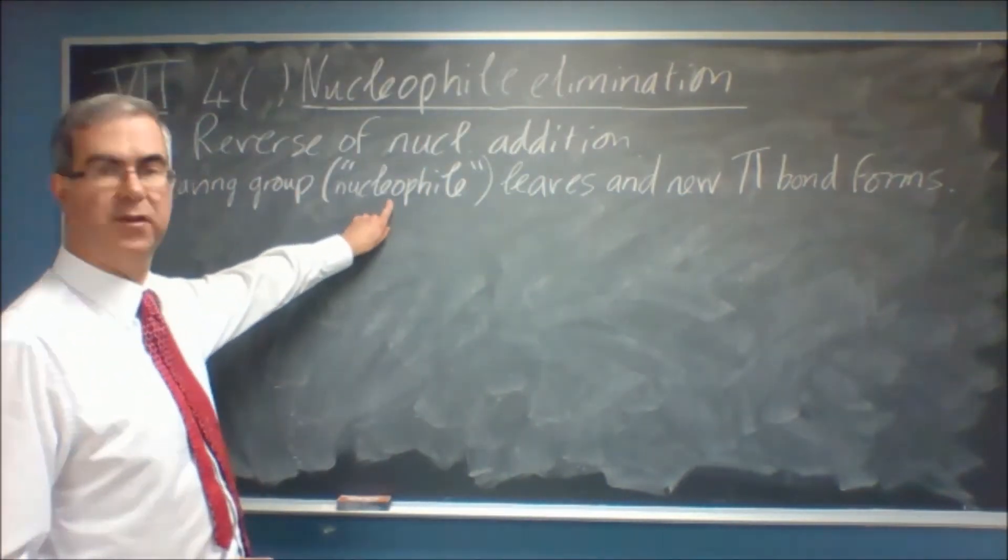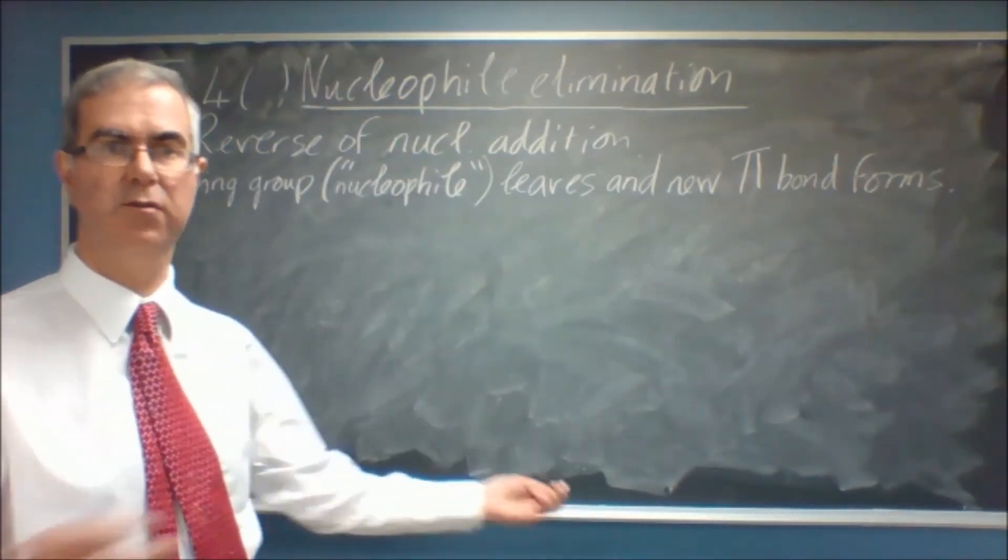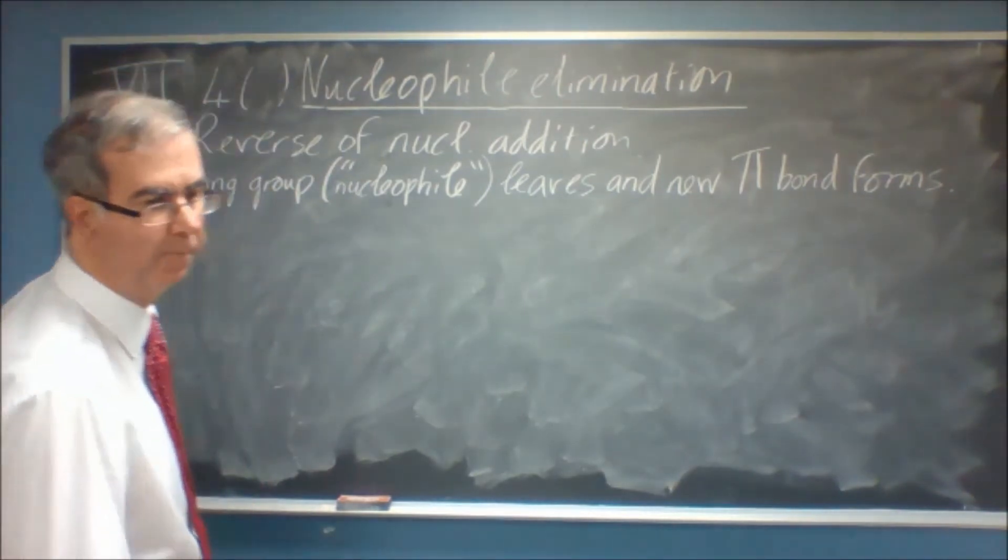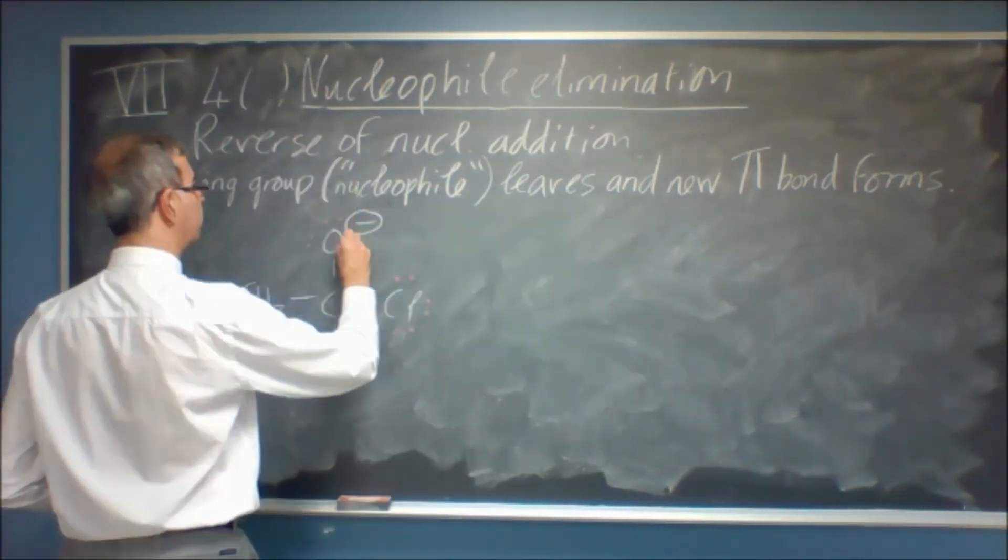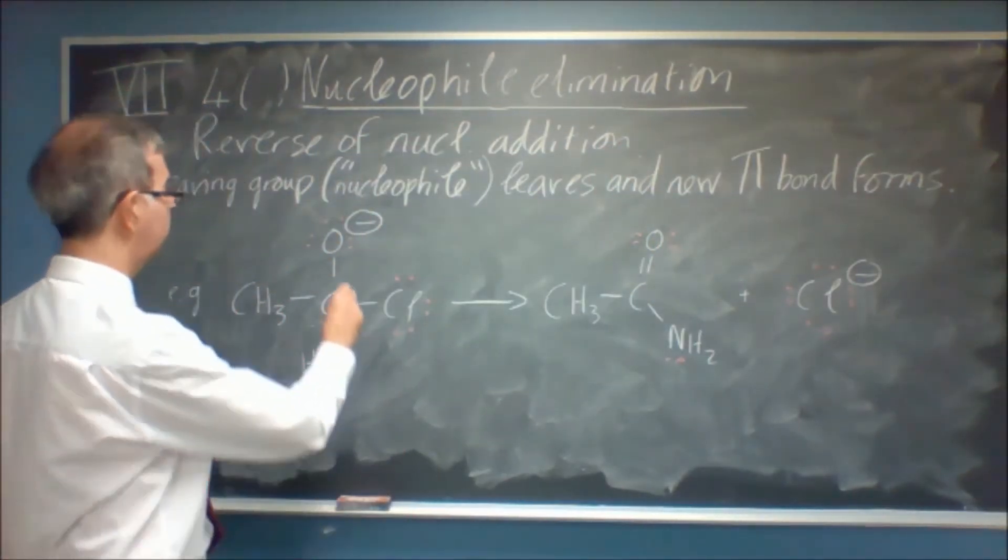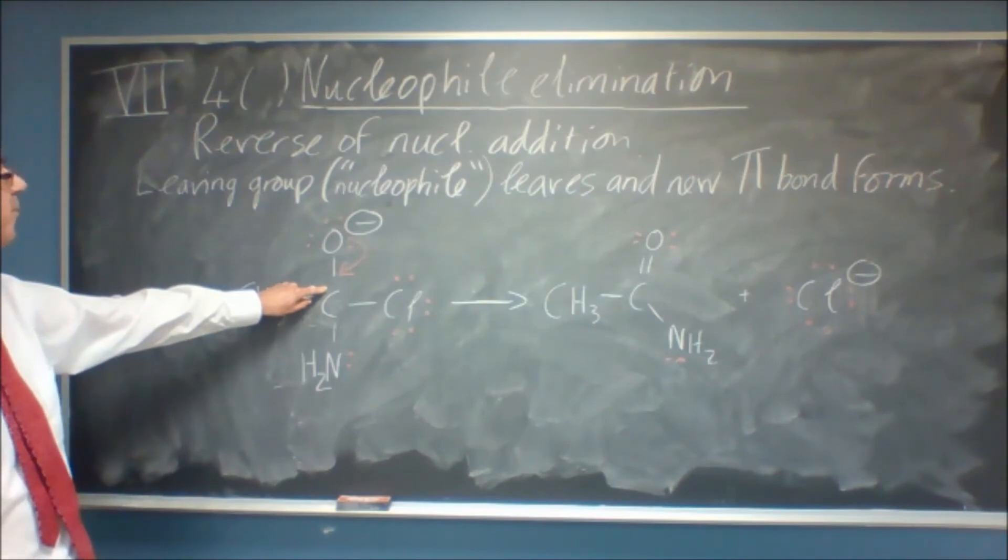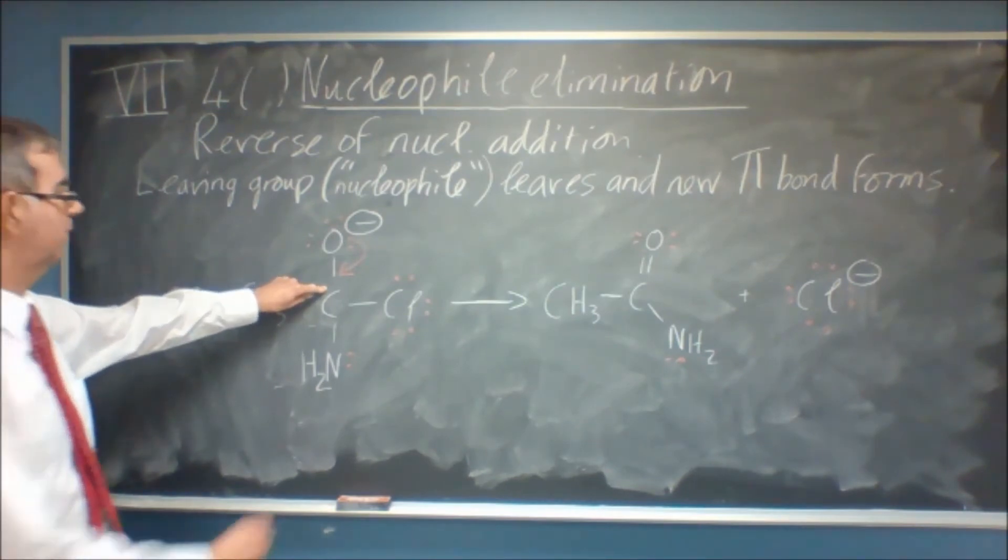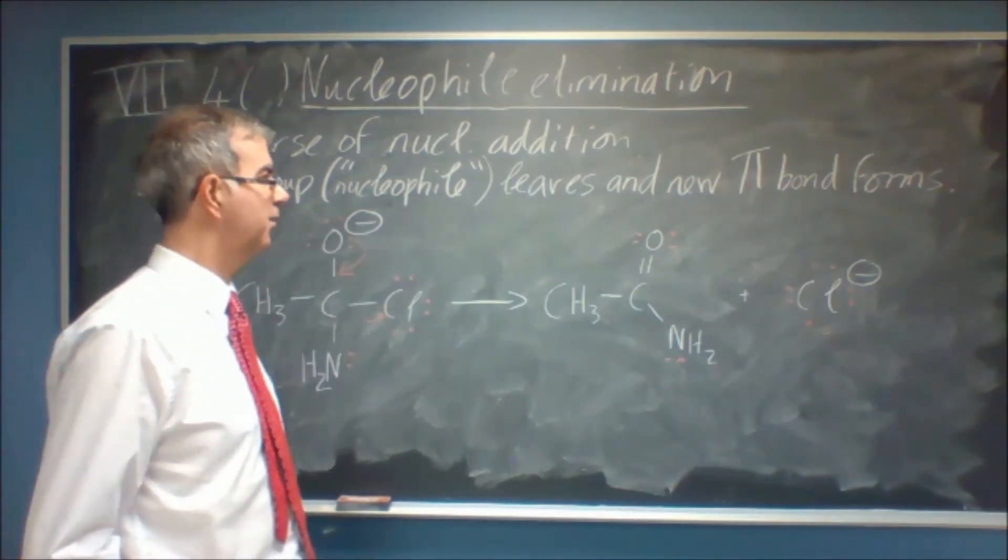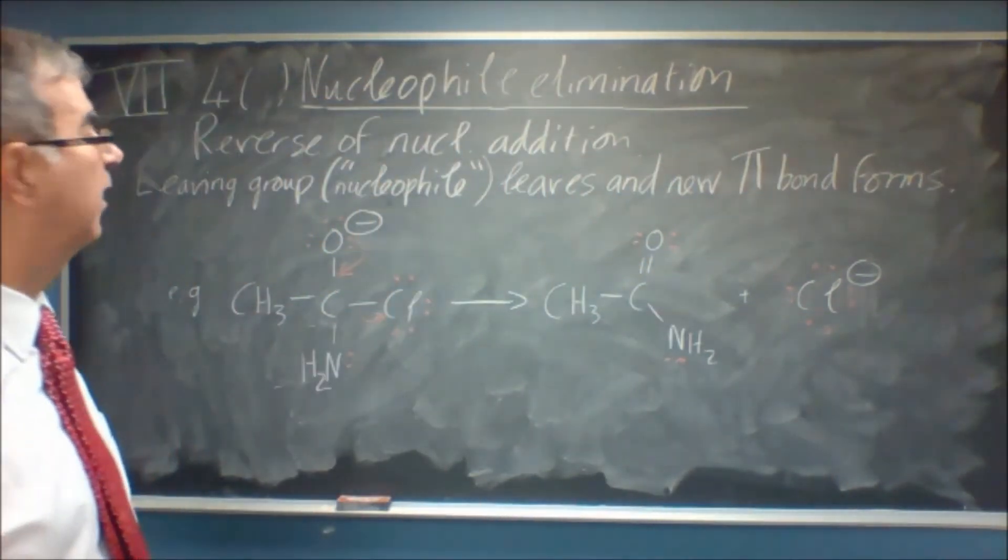Strictly speaking, this isn't a nucleophile until after it's left. But I guess it's called nucleophilic elimination to show that it's the opposite of nucleophilic addition. So here's an example. So what happens here is we're forming a new pi bond. And in the same step, simultaneously, we break the sigma bond to eject the leaving group. So that's a typical nucleophilic elimination.